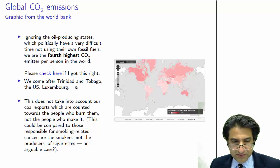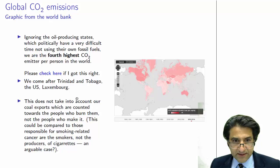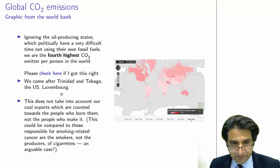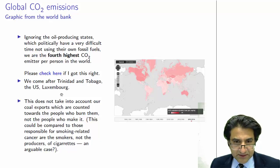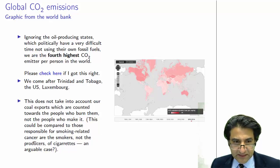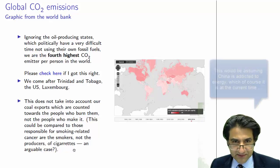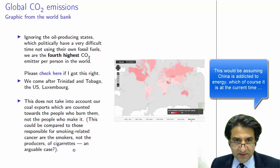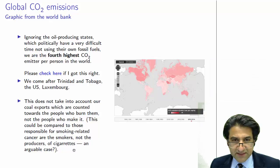Even worse is that the figures for Australia's CO2 emissions — which make us the fourth largest per-person emitter — do not take into account our coal exports. Most of our coal exports go to China, and the Chinese are the ones who burn our coal. Sadly for them, the coal they burn from us counts as their emissions. It's a little strange — it's somewhat like saying those responsible for smoking-related cancer are the smokers, not the producers of the cigarettes. Australia is the producer of the dirty coal, and we just send it off.